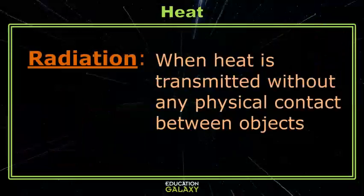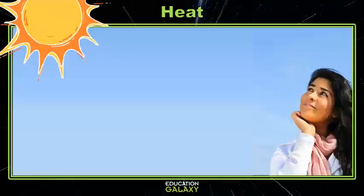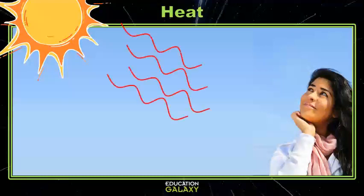Radiation happens when heat is transmitted without any actual contact between objects. Radiation flows through empty space and uses electromagnetic waves. A big example of radiation is when the sun's electromagnetic waves heat your skin.